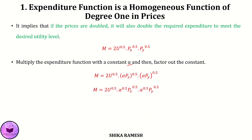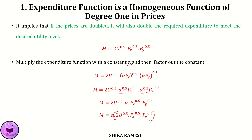Opening the brackets, we get m = 2u^0.5 × α^0.5 × px^0.5 × α^0.5 × py^0.5. Since α^0.5 × α^0.5 = α^1, rearranging gives m = α × 2u^0.5 × px^0.5 × py^0.5. This term is nothing but m, so we get m(α·p) = α × m(p). This shows that if the prices are scaled by alpha, the required expenditure to meet the desired utility level also scales by alpha.